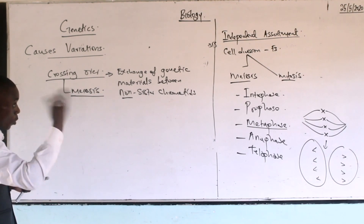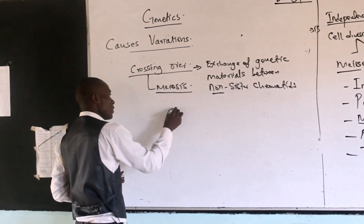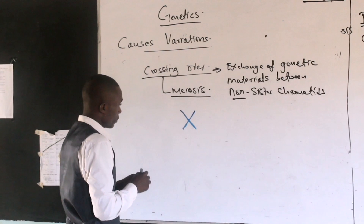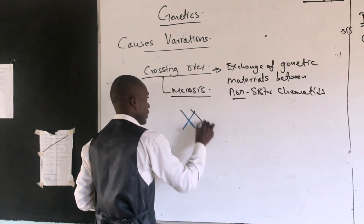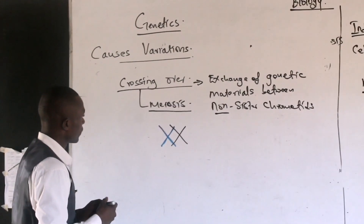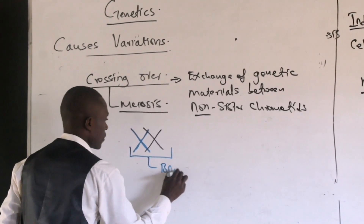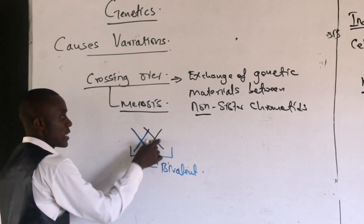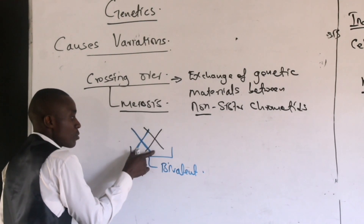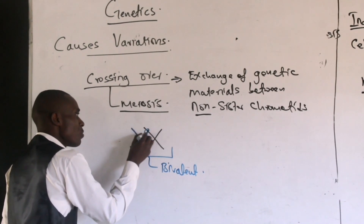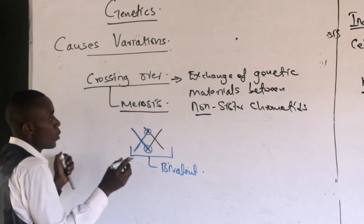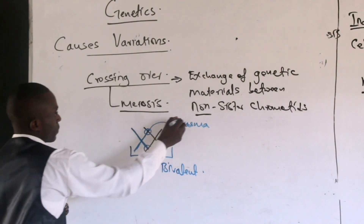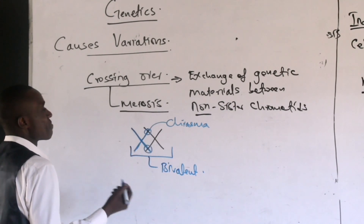To illustrate crossing over: consider a chromosome and its homologous chromosome — together they form a bivalent. These are a pair of homologous chromosomes that have come together and aligned themselves in a process called synapsis. The point of contact where these chromosomes attach to each other is normally called the chiasma (plural: chiasmata).